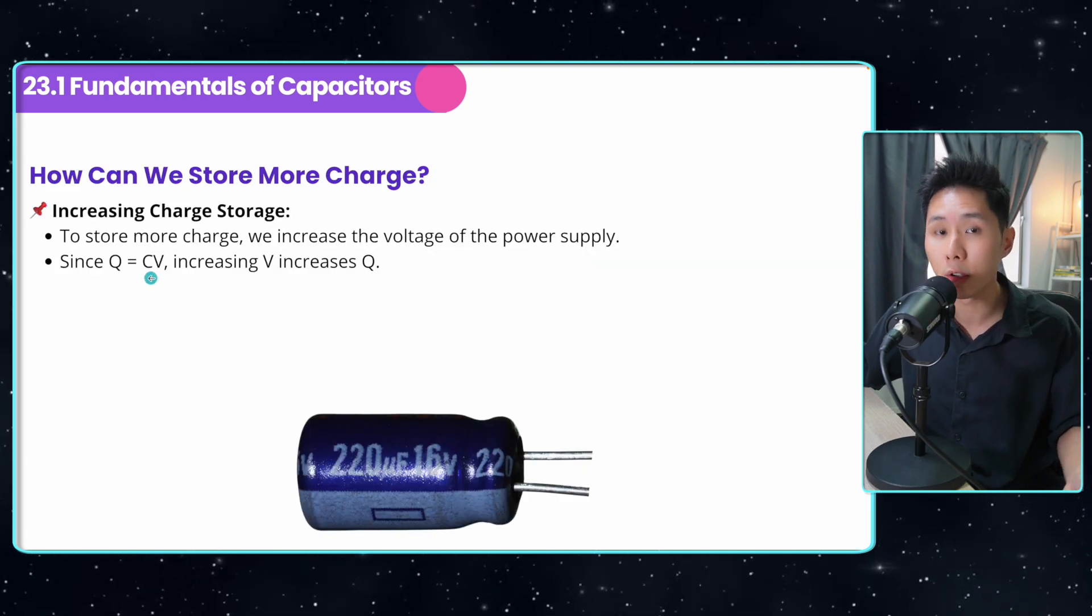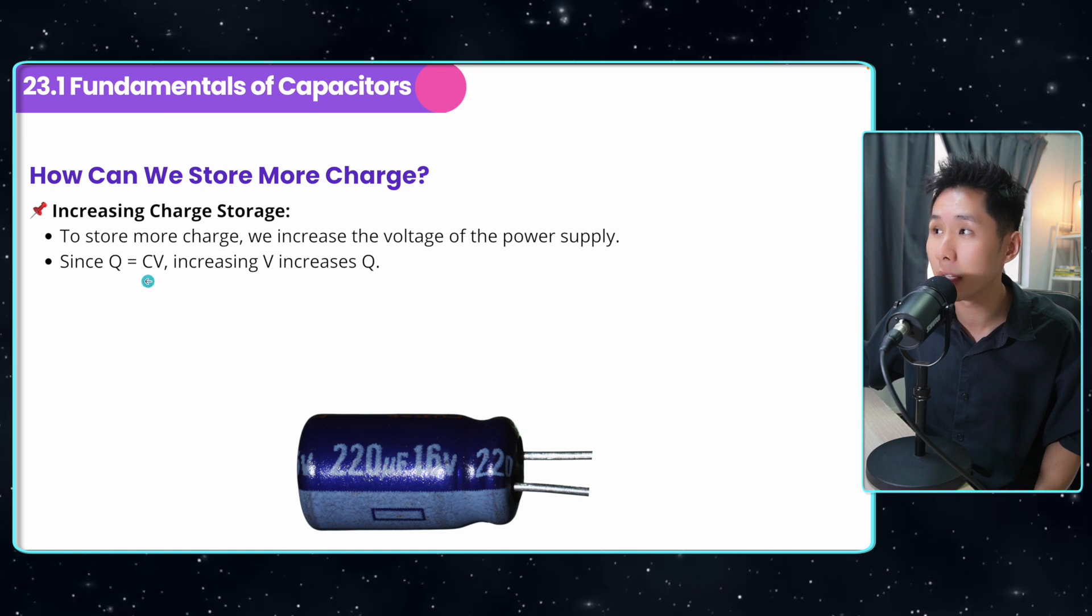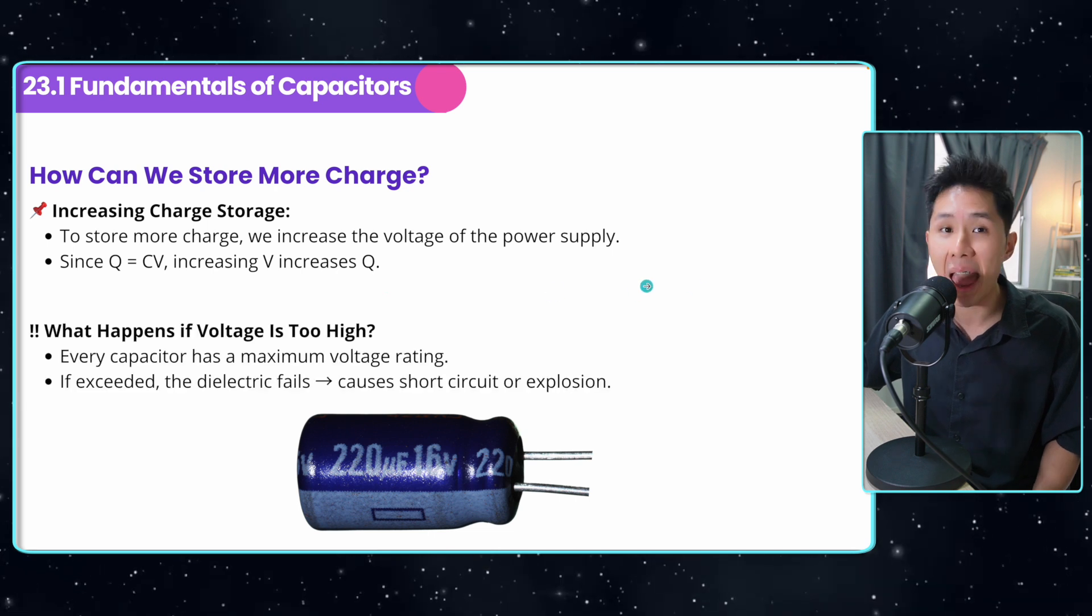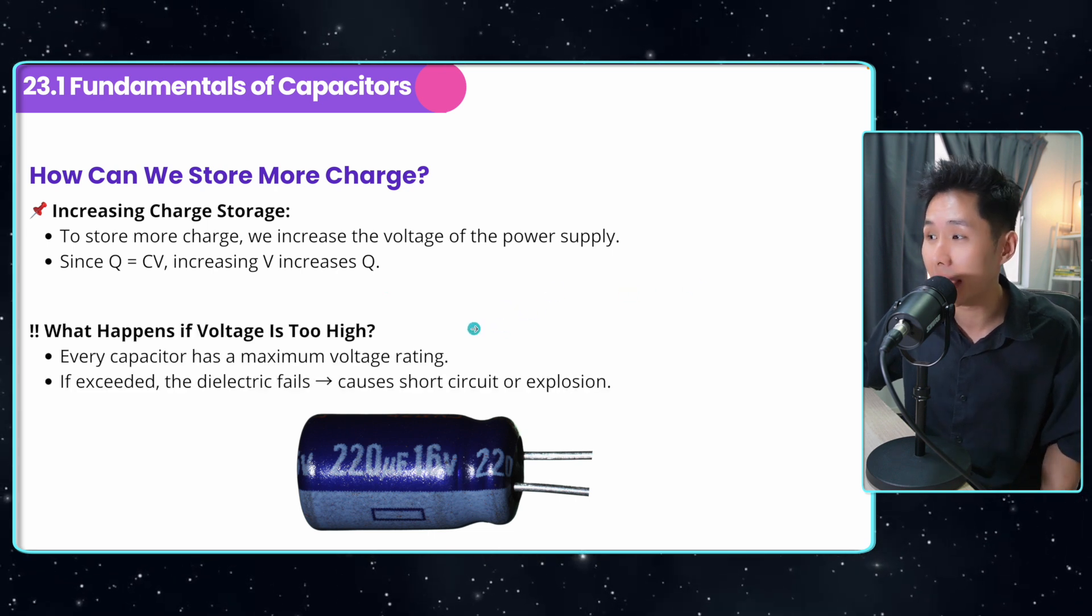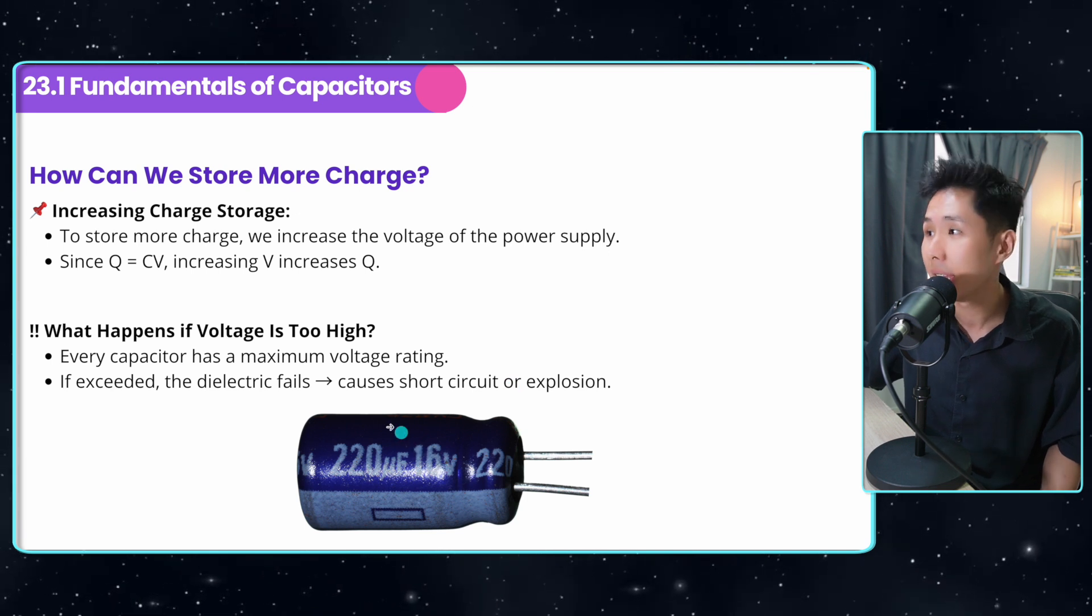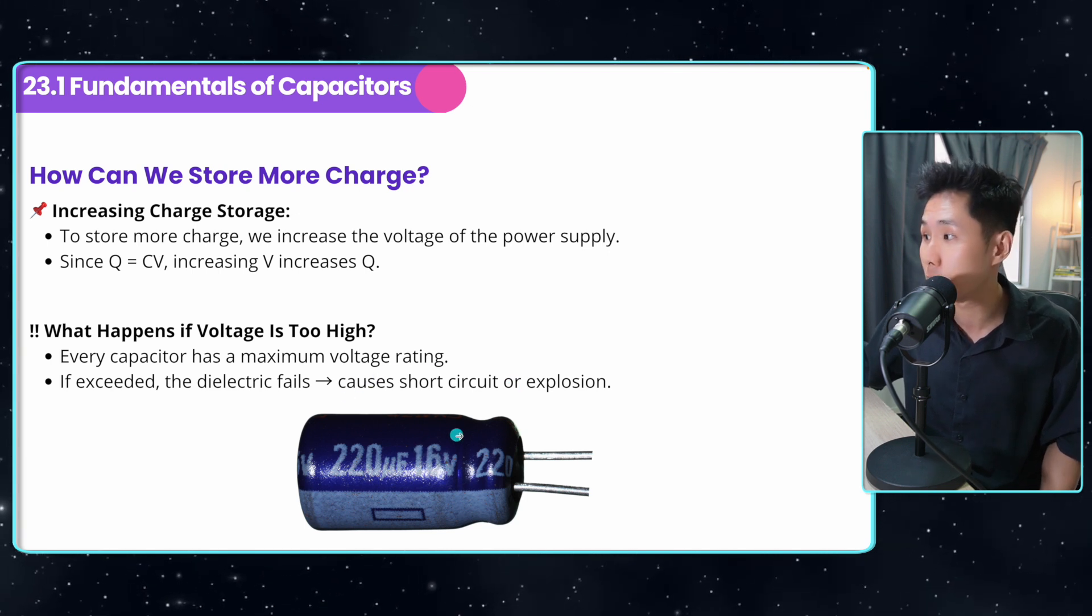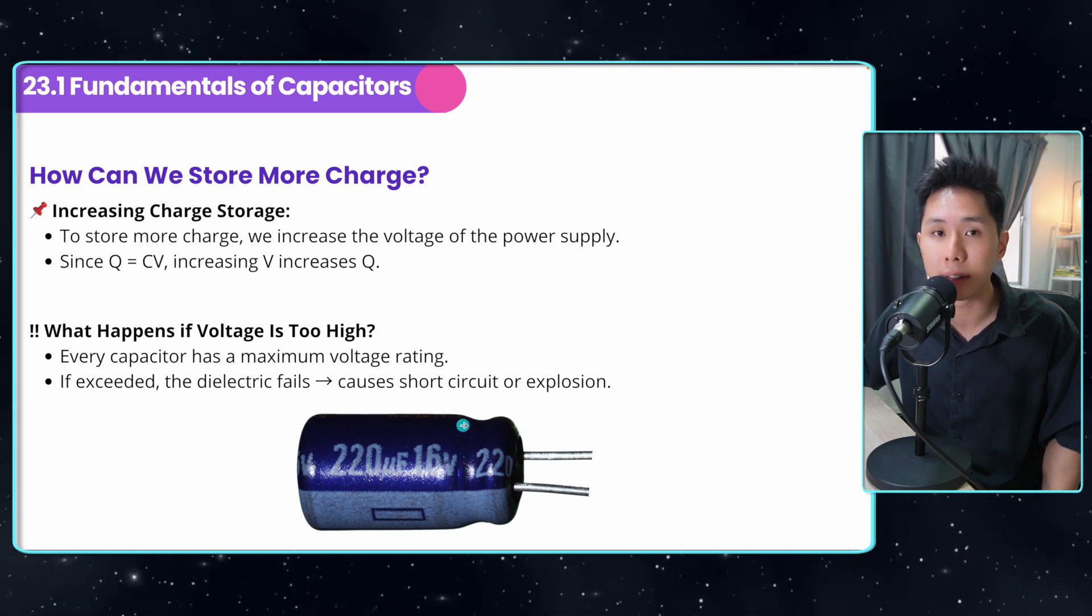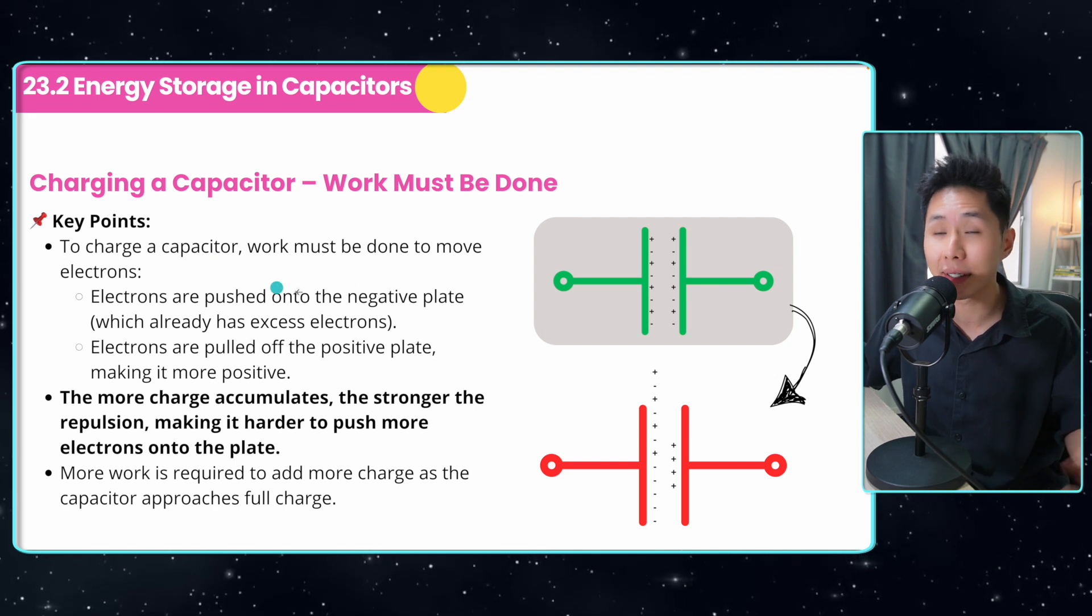So there are a few ways to store more charge. First, using the formula, we can see that increasing V voltage increases Q charge. And if the voltage is too high, then it might cause short circuit. So every capacitor, they have their own maximum voltage reading. So this is usually given here. And if you were to use a real life capacitor, you can check it out.